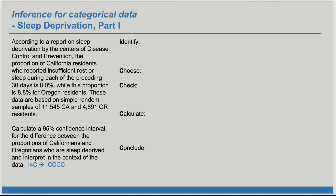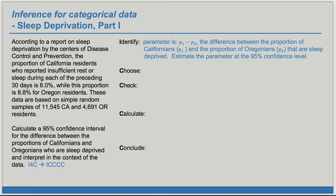First, we want to identify what it is we're trying to estimate — the parameter and the confidence level with which we'll estimate it. Here, the parameter of interest is a difference: it's the difference between the proportion of Californians that are sleep deprived, P1, and the proportion of Oregonians that are sleep deprived, P2. We want to estimate this at the 95% confidence level.